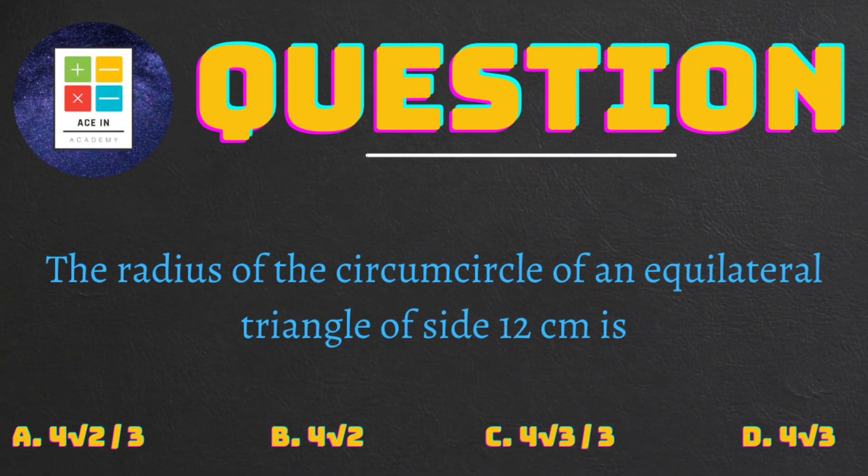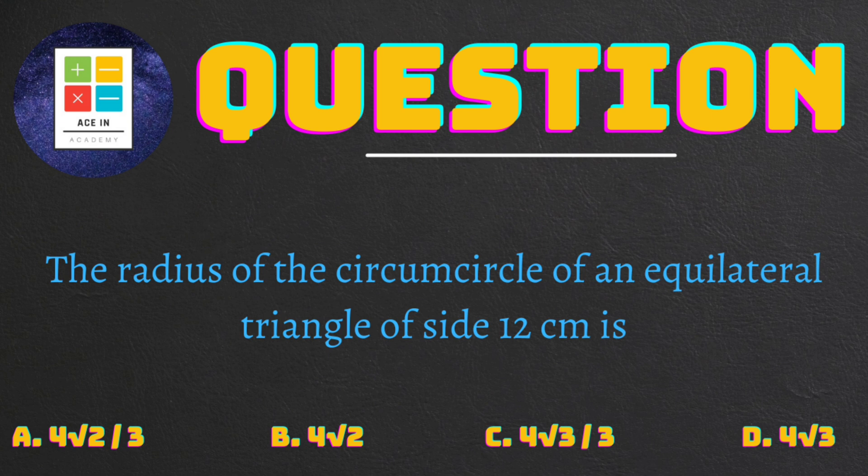The radius of the circumcircle of an equilateral triangle of side 12 centimeter is. Now we are provided with four options. A: 4√2/3 centimeter. B: 4√2 centimeter. C: 4√3/3 centimeter and D: 4√3 centimeter.